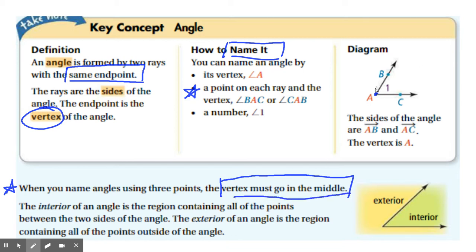So you use a point on one side or one ray, then the vertex, and then a point on the other ray. The order of those two points, B and C, do not matter.